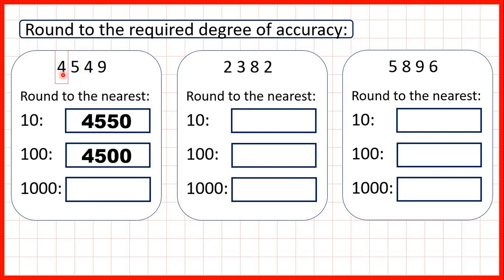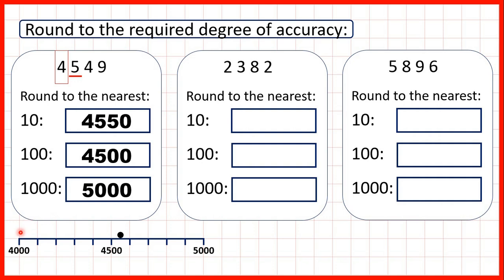Now, to the nearest thousand, we find the place value, underline the digit to the right, and we can see that we're rounding up, because we have a five. So, that means the digit that we've circled increases by one, so we get five thousand. On a number line, if I were to count up in thousands, I would say four thousand and then five thousand, and our number is between those thousands. For this number line, we're increasing by one hundred with each square, because in the method we underlined our hundreds digit. We can see that our number, four thousand, five hundred and forty-nine, is past the midpoint — closer to five thousand than to four thousand — and that's why, when we're rounding to the nearest thousand, we need to round up.